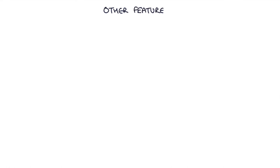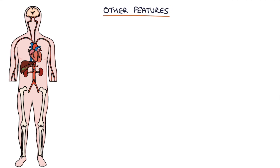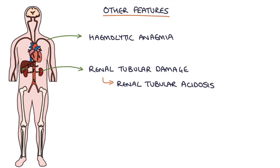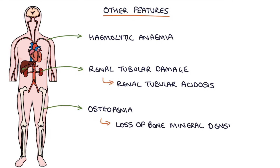There are a few other features. Often you get a hemolytic anemia where the red blood cells are being broken down too quickly. You can get renal tubular damage which leads to renal tubular acidosis, and you can get osteopenia, which is a loss of bone mineral density.